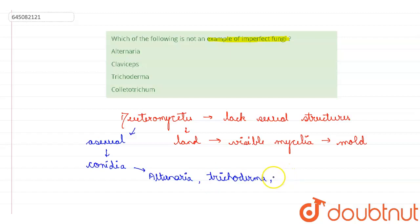And the other one is Colletotrichum. So these are some examples and there are also examples like Aspergillus, mainly Aspergillus niger. So these are some of the examples of this Deuteromycetes and they reproduce by these asexual spores which are known as conidia.